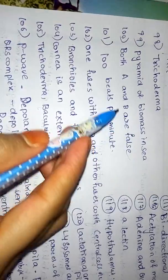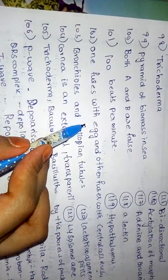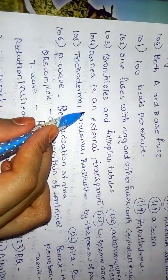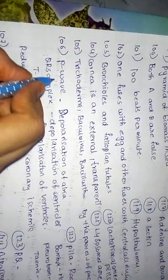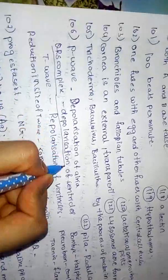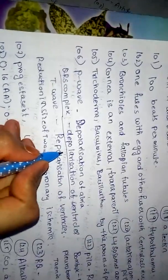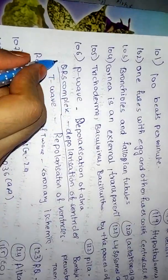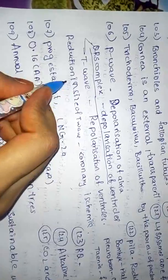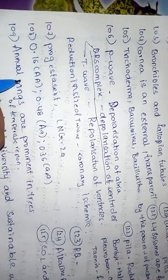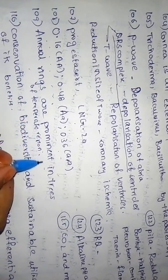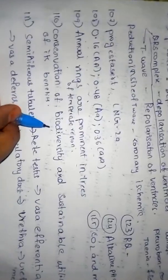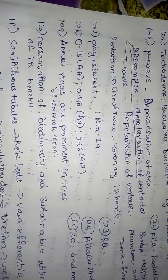Trichoderma, pyramid of biomass in C, both A and B are false, 100 beats per minute, one fuses with egg and other fuses with central cell, bronchioles and fallopian tubes, cornea is an external transparent, Trichoderma, baculovirus, Bacillus thuringiensis. P wave depolarization of atrium. Progesterone, LNG 20, 0.16 AA, 0.48 AA, 0.36. Smaller, smaller annual rings are prominent increase in temperate region. Conservation of biodiversity and sustainable utilization of its benefits.